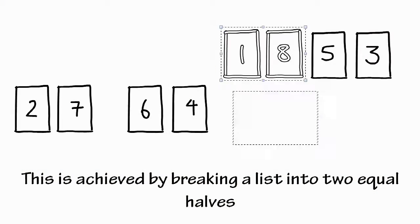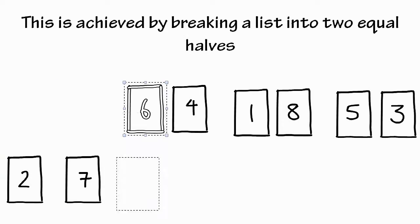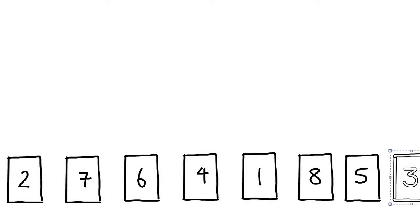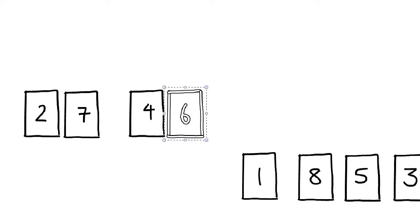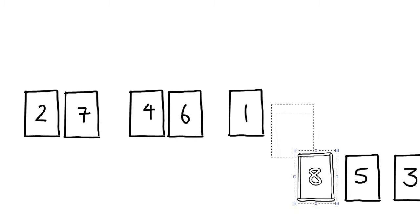What Merge Sort does first is to actually break up a list into many sublists — as many sublists as there are individual items. In fact, these sublists are lists of size 1. So basically what we're doing here is grabbing our unsorted list and just breaking it all up. Then, each pair of neighboring sublists are going to be merged together. Remember that merging only works on sorted lists, but lists of size 1 are inherently sorted. When we merge these two lists of size 1 together, we get a list of size 2 that is sorted.